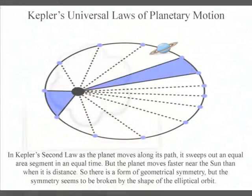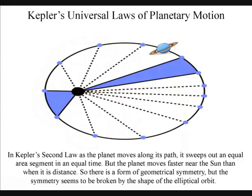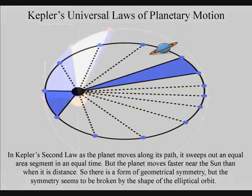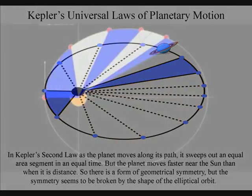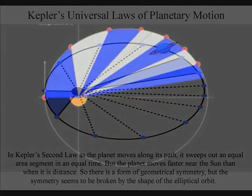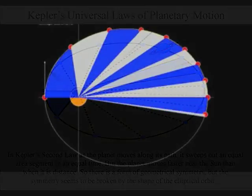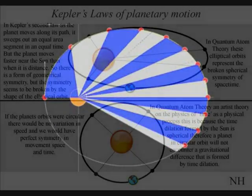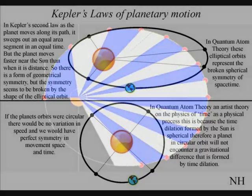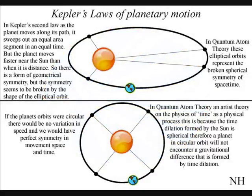He found that the planets move in elliptical orbits, with speeds that vary relative to their distance from the Sun. As a planet moves along its path, it sweeps out an equal area segment in an equal time. So there is a form of geometrical symmetry, but the symmetry is broken by the shape of the elliptical orbit.